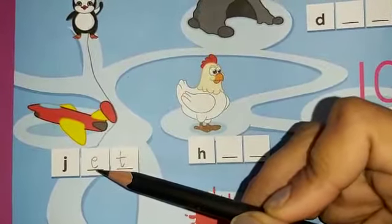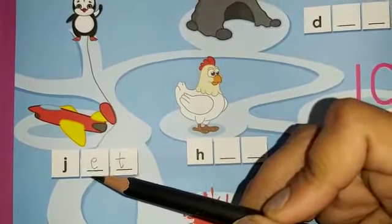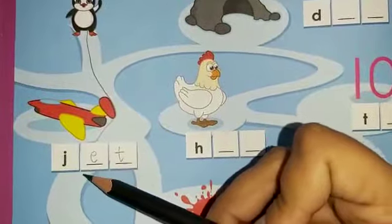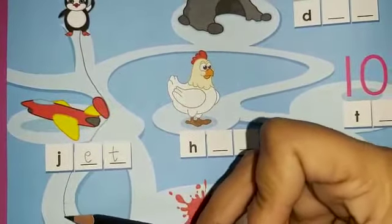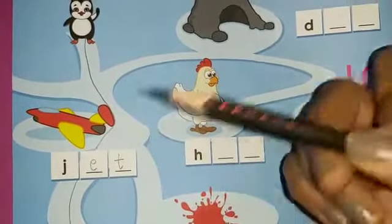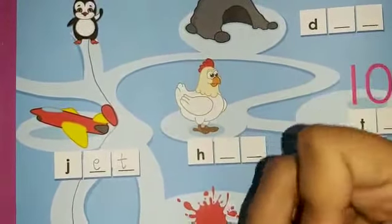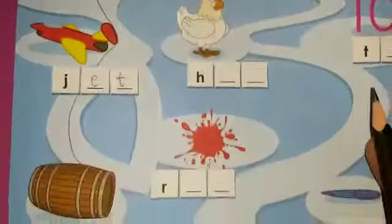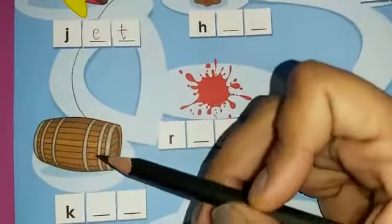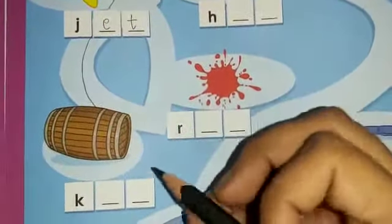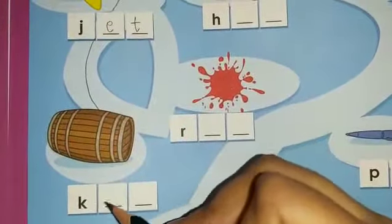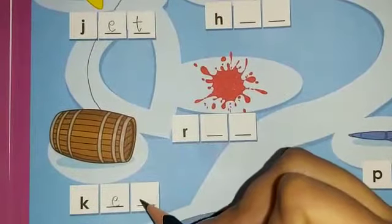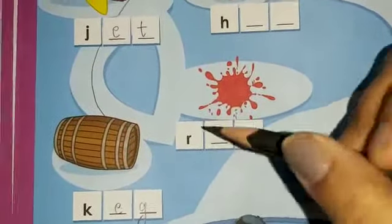After jet, we are going to move further. Where do we reach? This is a keg. So we are going to write down K-E-G, E-G, keg.